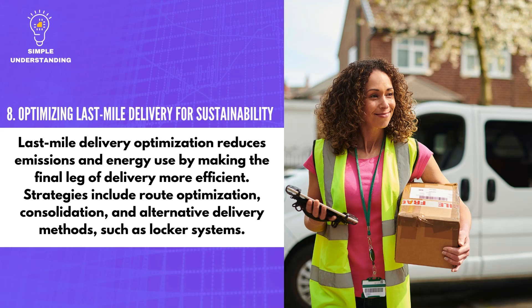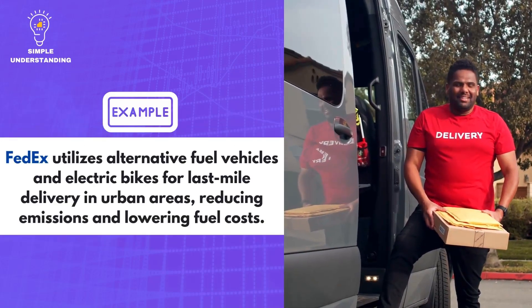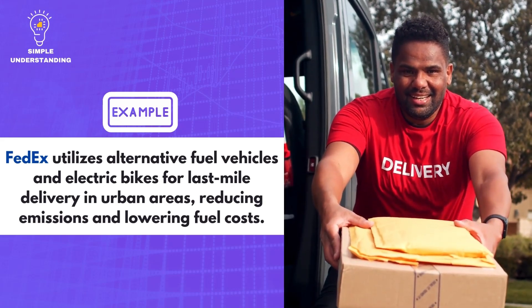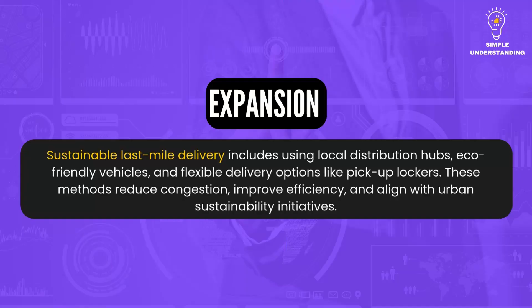8. Optimizing Last-Mile Delivery for Sustainability. Last-mile delivery optimization reduces emissions and energy use by making the final leg of delivery more efficient. Strategies include route optimization, consolidation, and alternative delivery methods such as locker systems. FedEx utilizes alternative fuel vehicles and electric bikes for last-mile delivery in urban areas, reducing emissions and lowering fuel costs. Sustainable last-mile delivery includes using local distribution hubs, eco-friendly vehicles, and flexible delivery options like pickup lockers, reducing congestion and improving efficiency.